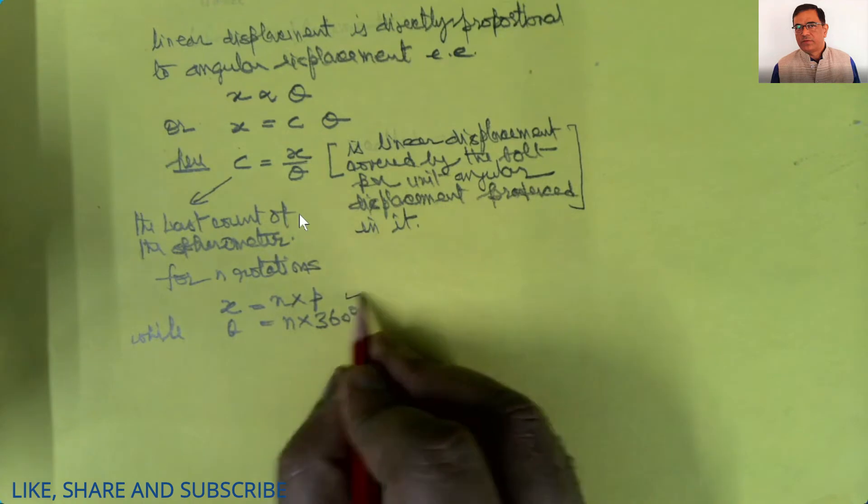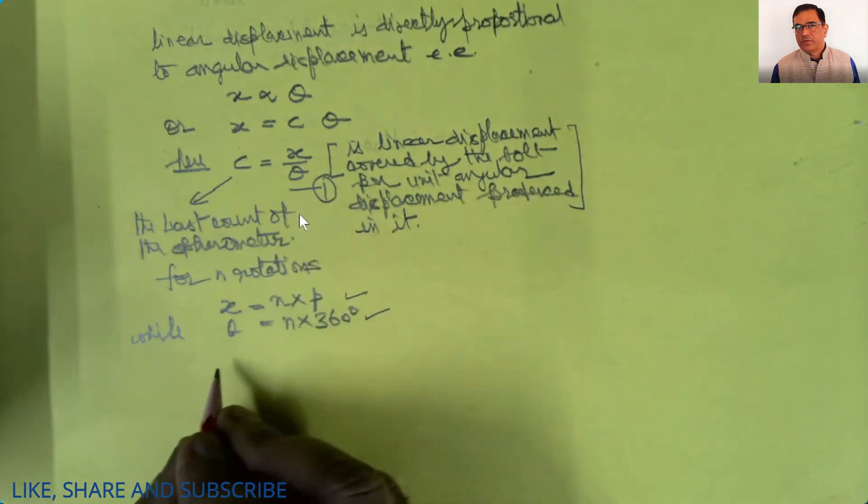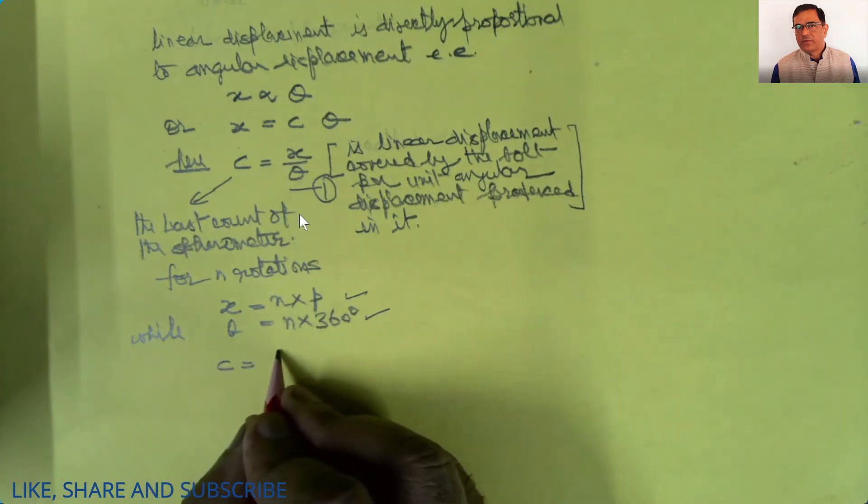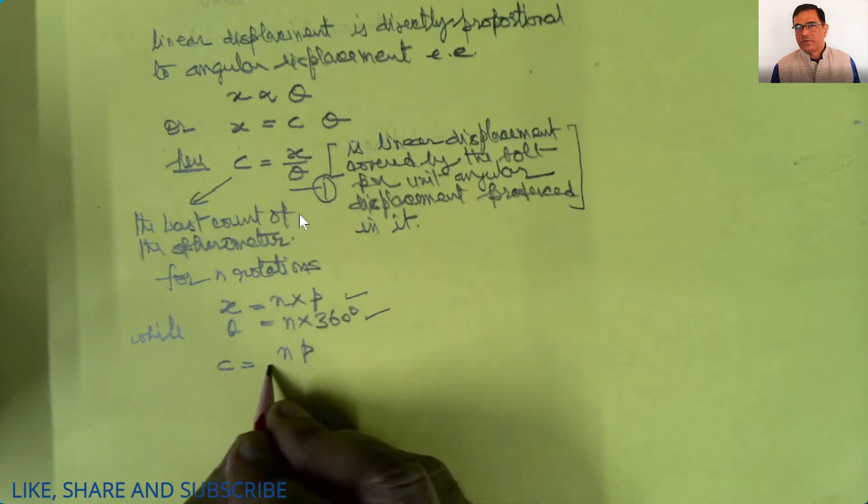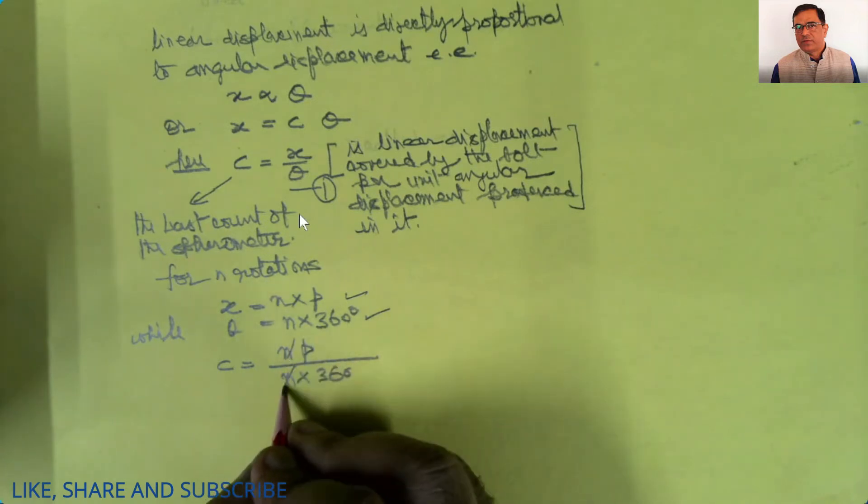Substituting these values in relation number one, we get c equals np divided by n times 360 degrees. n and n will cancel.